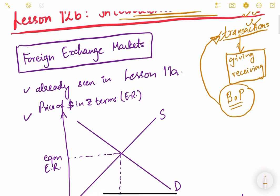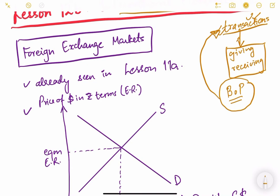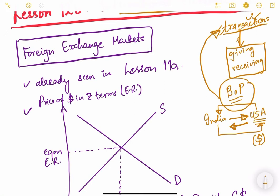Whenever foreign transactions are taking place, one basic understanding we should keep in mind: if India is transacting with USA, it can be both ways. If India is importing something from USA, India will have to pay the US exporters. The Indian people importing goods from USA will have to pay in dollars, because USA manufacturers and service providers will not accept rupees — dollars are of use to them.